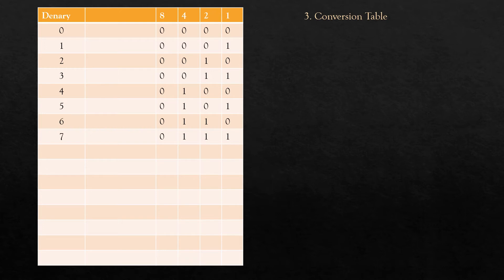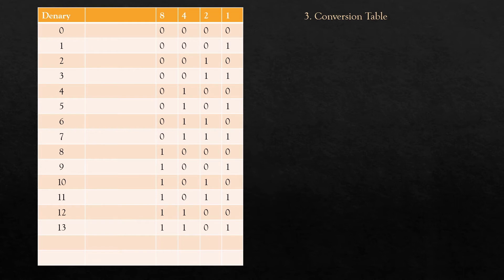How do we know that 7 is represented by 1 1 1? Well, 7 is equal to 1 plus 2 plus 4. What do you think 8 in denary is represented by in binary? You're right, it's represented by 0 0 0 1. Then 9 is 1 0 0 1, 10 is 0 1 0 1, 11 is 1 1 0 1, 12 is 0 0 1 1, 13 is 1 0 1 1, 14 is 0 1 1 1, and finally 15 is 1 1 1 1, equal to 1 plus 2 plus 4 plus 8.